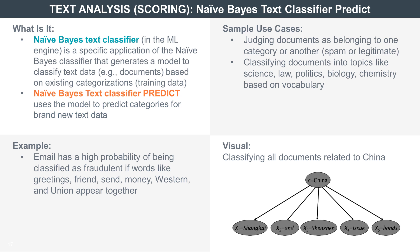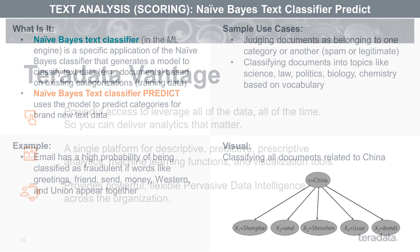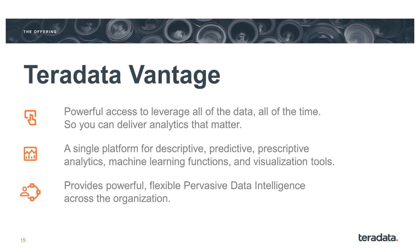Use cases specific to the Naive Bayes text classifier PREDICT include judging documents as legitimate or spam, or classifying documents into topics like science, law, politics, or chemistry based on certain keywords. Thank you, Betsy.